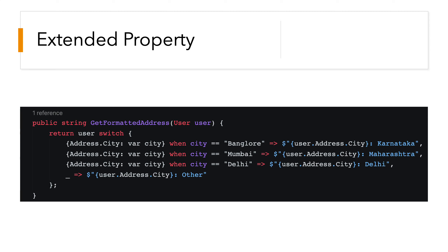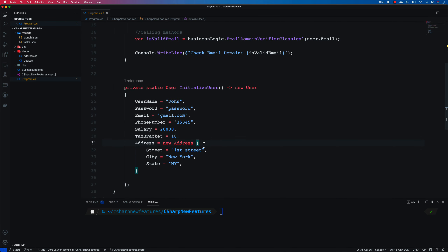Finally, C-sharp 10 introduces the extended property pattern, which helps you match the value within a property of a complex type. For example, if the user has an address property of type Address, and you want to match the city named Bangalore, you return something like "Bangalore: Karnataka". To use this feature you need C-sharp 10, available on .NET 6.0 — download it, update your project, and it works. We'll see all these things in the live demo now.